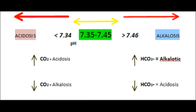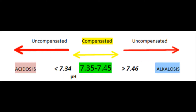Acidosis can be a result of two things: either an increase in the carbon dioxide levels in the body, or a decrease in the hydrogen carbonate levels. Alkalosis, on the other hand, can be due to a decrease in carbon dioxide levels or an increase in the level of the hydrogen carbonate ions. The body has several mechanisms through which it can control this pH change.